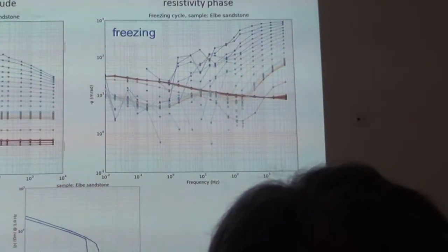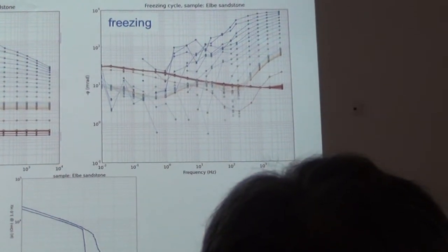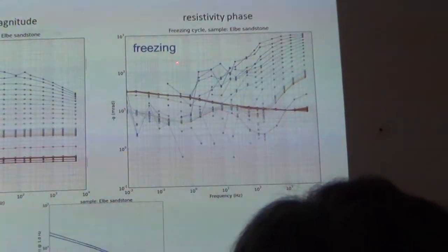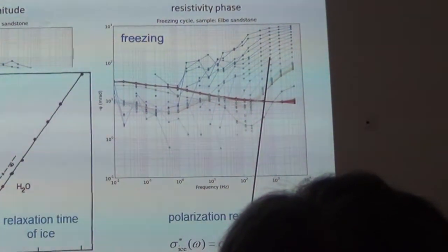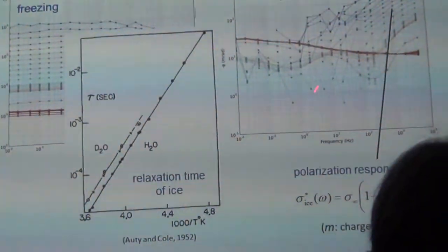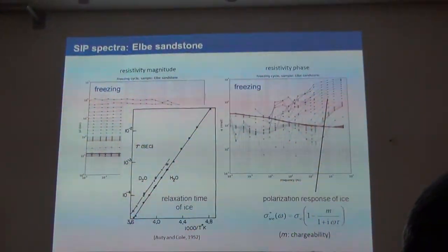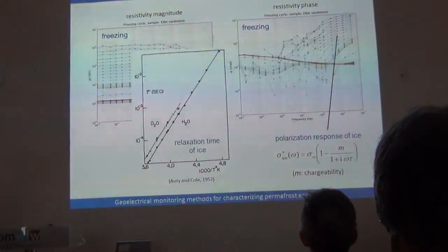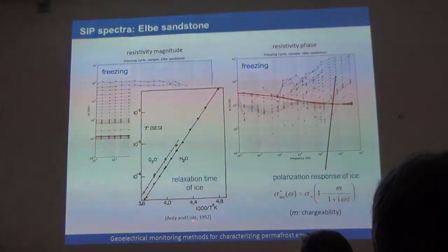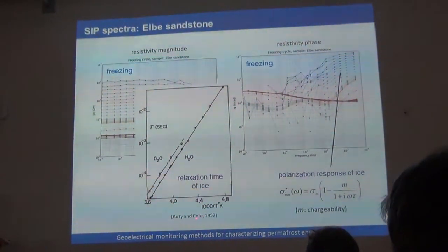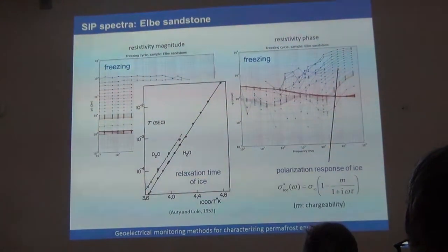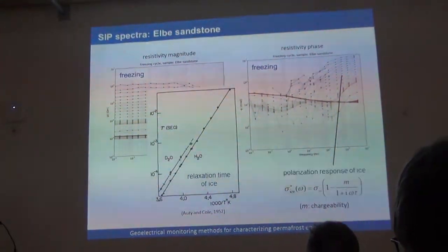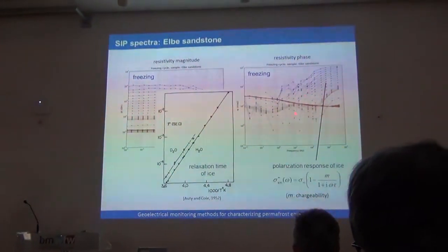Two things happen upon the freezing transition: first, this small electrochemical membrane polarization response breaks down, which makes sense because the pore space is now starting to freeze - that mechanism can no longer be sustained. The other thing is a very large high-frequency response appears, which is huge in terms of signal and quite systematic. Doing these measurements in the lab is challenging due to noise - I wouldn't claim we can easily do this in the field. But comparing with Cole-Cole models, it reflects well-known behavior between the characteristic relaxation time of the ice polarization process and its temperature dependence - consistent with the 1952 Debye paper.